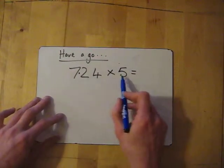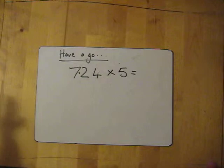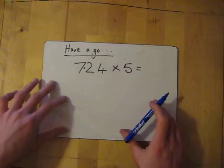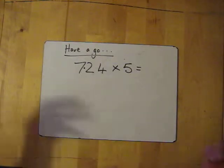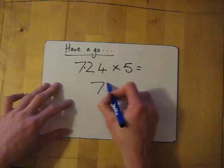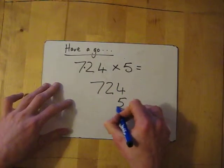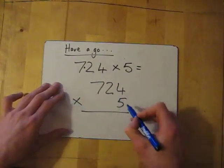Now have a little go yourself at this one: 7.24 times 5. First of all, forget about the decimal point. I'll let you pause if you want to have a go. I'll go through the answer in three seconds: three, two, one. Forget about the decimal point, 724 times 5.